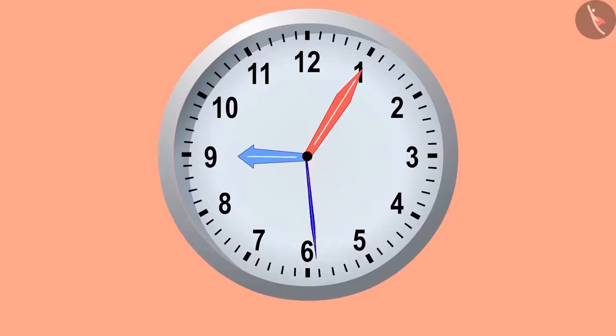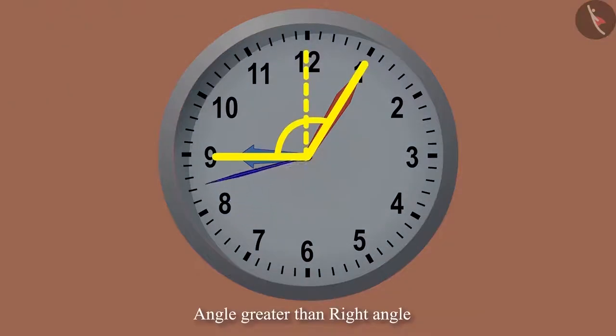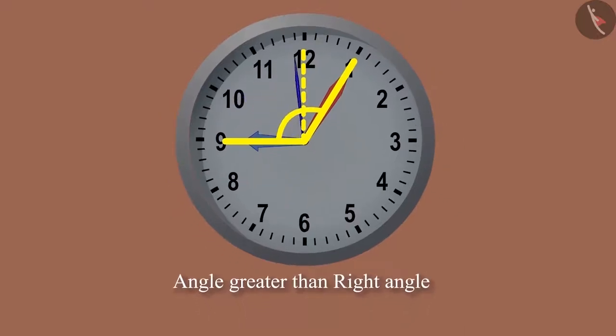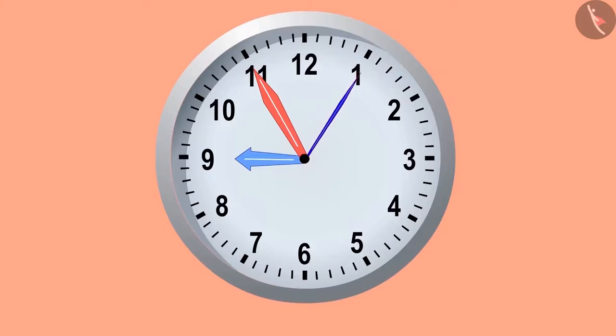It is 5 minutes past 9 now. If we look at the angle made by these two hands, they are making an angle greater than a right angle. In the same way, when it is 5 minutes to 9, then they would be making an angle less than a right angle.